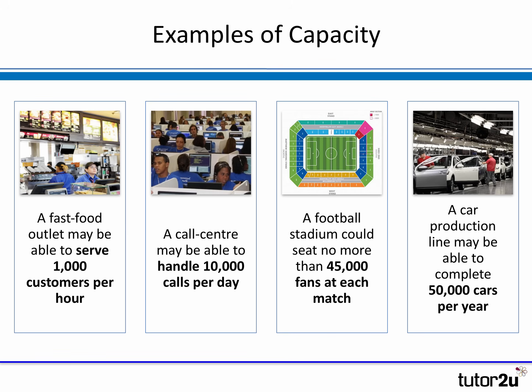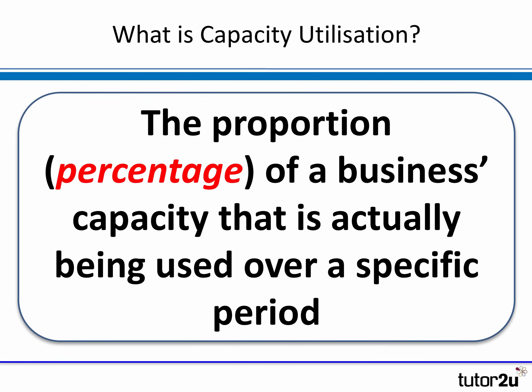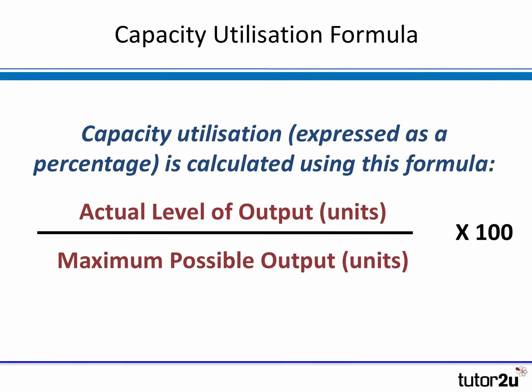So capacity is a measure of output. Capacity utilization is a percentage — it compares the actual output that is produced or used, compared with the potential. You need to know both the actual output and the capacity, the potential output. We calculate capacity utilization by dividing the actual level of output in units by the potential output — the capacity, also in units — and then multiplying by 100 to give a percentage: the proportion of potential capacity that is actually used.